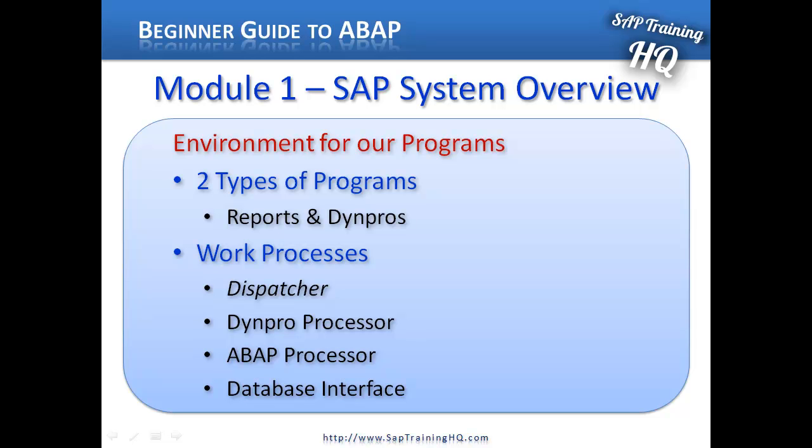The next important element is the ABAP processor, and this is responsible for the actual processing logic of our programs. It receives screen entries from the DimPro processor and transmits the screen output to our program. It's the ABAP processor that can perform the logical operations and arithmetical calculations in our programs. It can check authorizations and read and write to the database over the database interface. And it's the database interface that is our third important element.